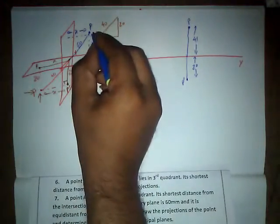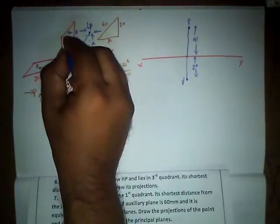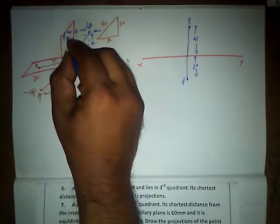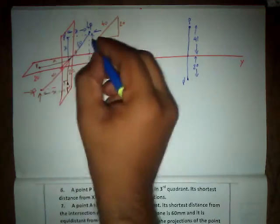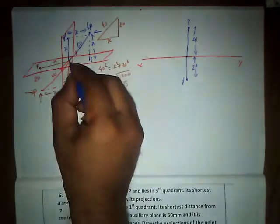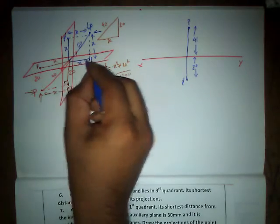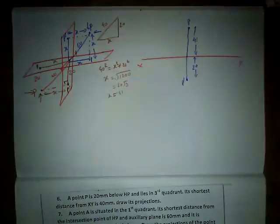Now if we see the front view and the top view, we are going to get P' here and this is going to be X mm. If I see the top view here, we are going to get small p and this is going to be X mm again. We have a right angle triangle over here.